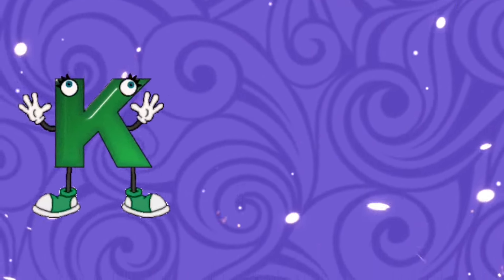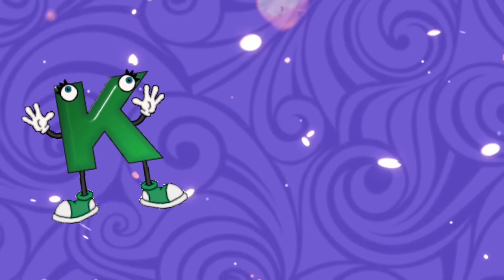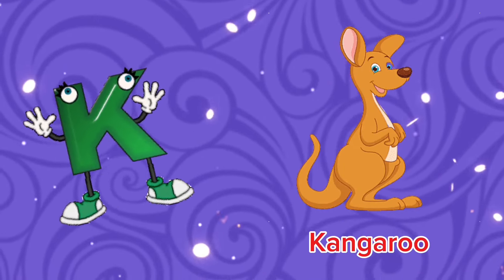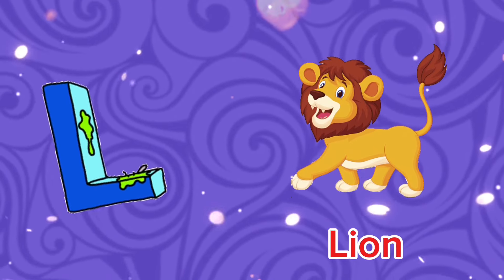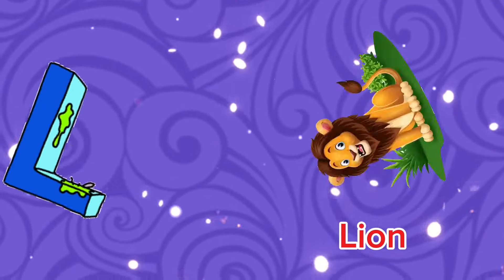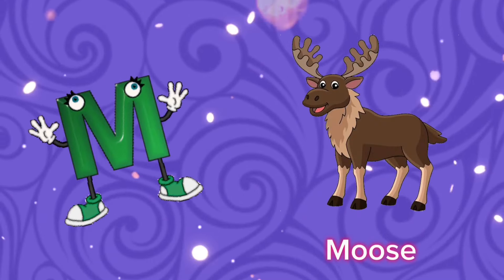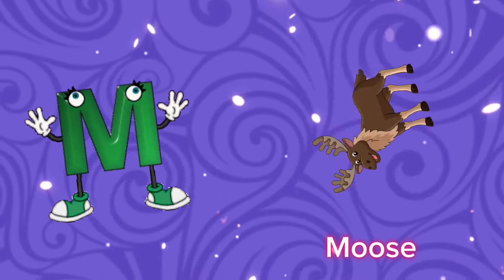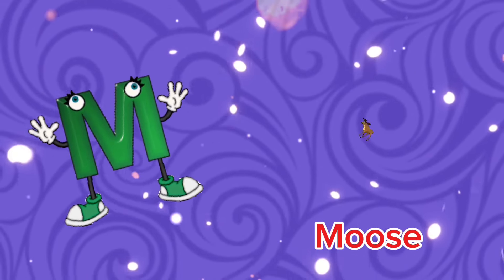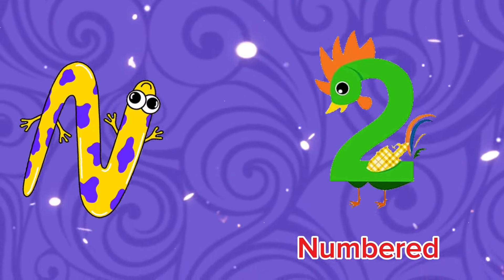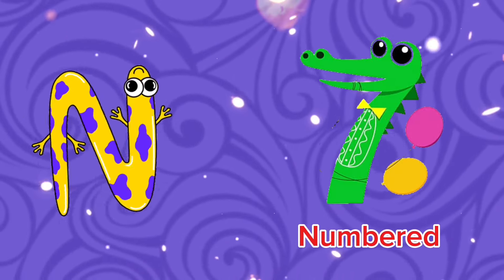K is for Kangaroo, c-c-kangaroo. K is for Kangaroo, c-c-c. L is for Lion, l-l-lion. L is for Lion, l-l-l. M is for Moose, m-m-moose. M is for Moose, m-m-m. N is for Numbered, n-m-numbered. N is for Numbered, n-m-m-m.